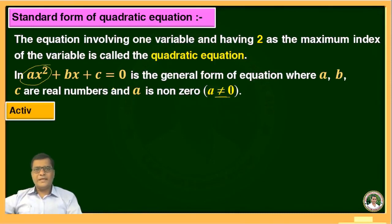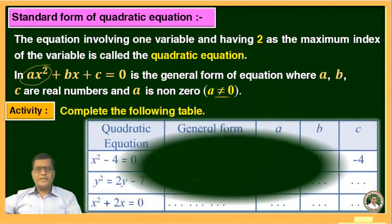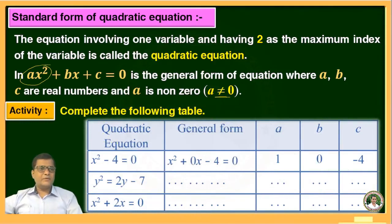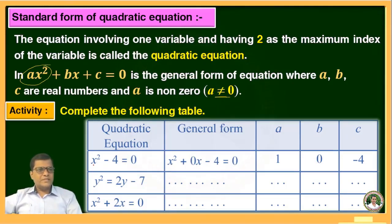We will see one activity: complete the following table. Some quadratic equations are given, and we need to write the standard form and the values of a, b, and c. The first equation is x² − 4 = 0, which in general form is x² + 0x − 4 = 0.